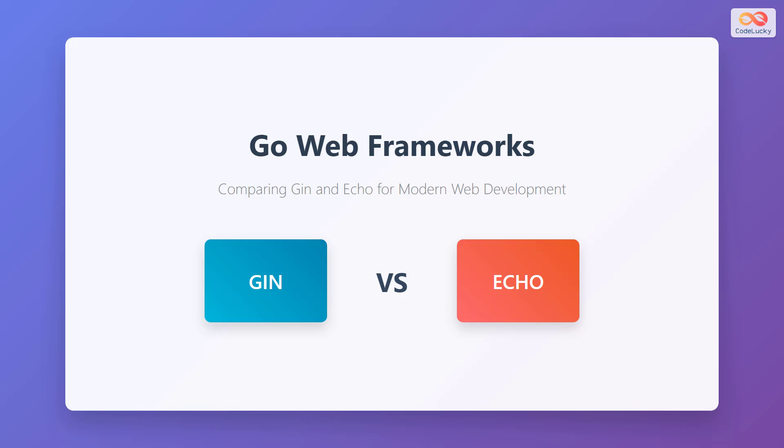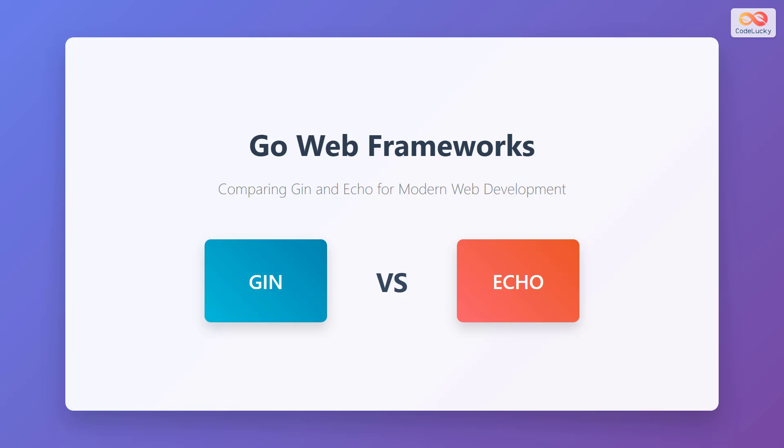Welcome to our comprehensive comparison of Go web frameworks. Today we'll dive deep into two of the most popular frameworks in the Go ecosystem, JIN and ECHO. Both frameworks have gained significant traction among developers for building high-performance web applications and APIs.